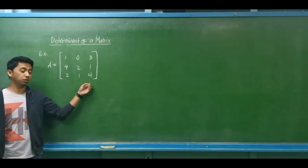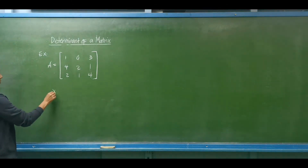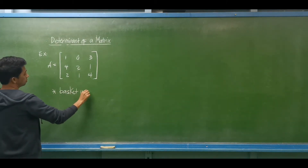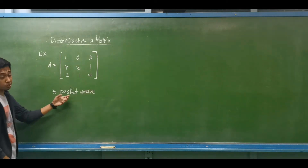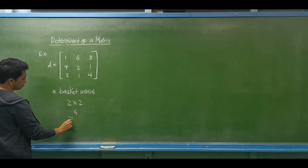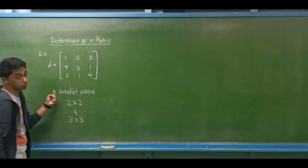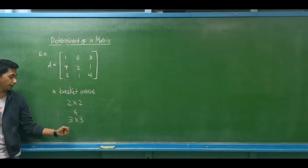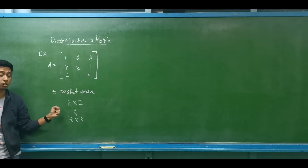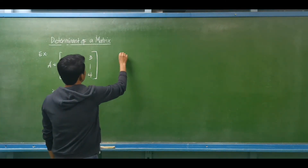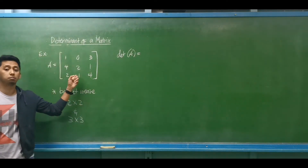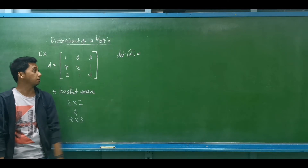Using the same matrix again, we will now use the basket-weave method. The basket-weave method is applicable for 2 by 2 and 3 by 3 matrices only. For the determinant of matrix A, we need to convert this 3 by 3 matrix into a 3 by 5 matrix. We copy the original matrix first.